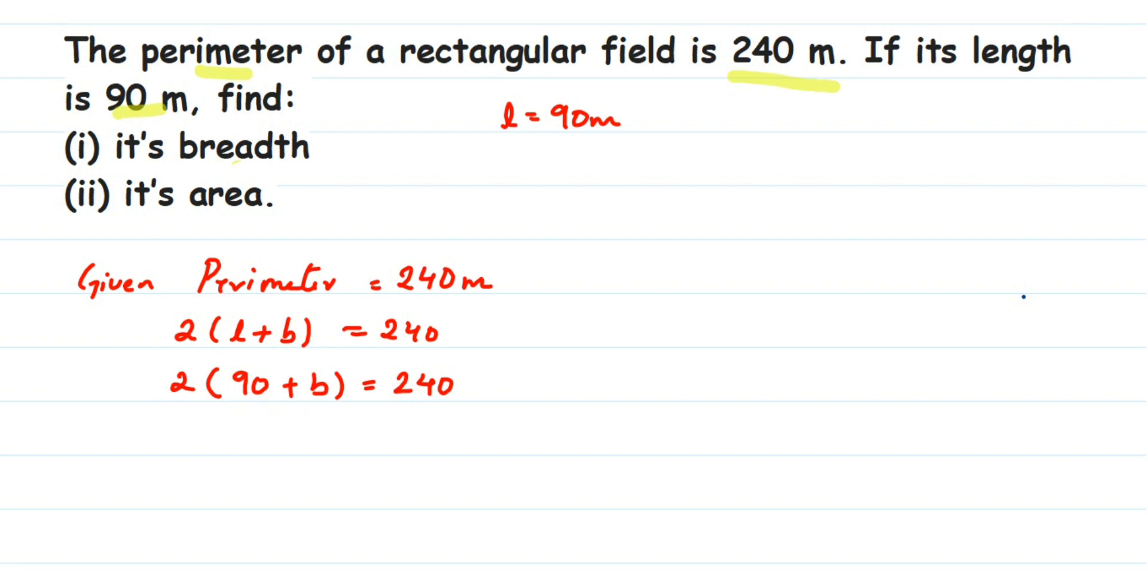90 plus b equals 240 divided by 2. We can cancel this - in two's table, 2 ones and 2 120s. Now we got 90 plus b equals 120.